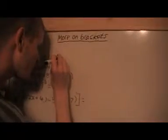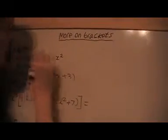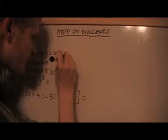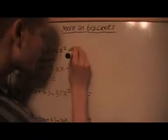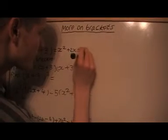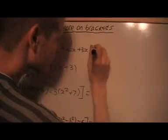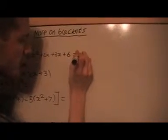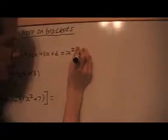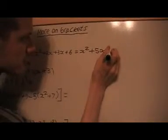So we'll do x by x, we get x squared, x times 2 we get 2x, x times 3, 3x, and 2 times 3, 6. These x's simplify, so that's equal to x squared, plus 5x, plus 6.